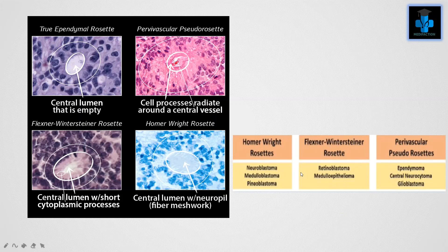Since rosettes are very important, let's learn about the four types of important rosettes. The first is the true ependymal rosette, where you can see a central lumen that is empty. The second is the perivascular pseudorosette, in which cell processes radiate around the central vessel. Examples of perivascular pseudorosettes are ependymoma, central neurocytoma, and also glioblastoma. The third is the Flexner-Wintersteiner rosette, where we can appreciate a central lumen with short cytoplasmic processes. Examples include retinoblastoma and also medulloepithelioma.